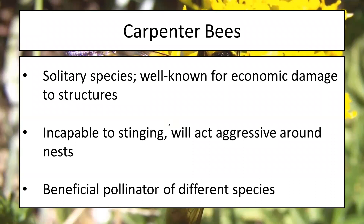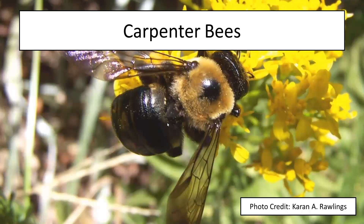Looking back at the image, the carpenter bee probably most closely resembles a bumblebee in terms of size. But look at how smooth its body is — it has a black patch on its thorax, and its abdomen doesn't have much in the way of hair. So it's much less hairy than our other species and will be more black overall. It's a little bit larger than mason bees. But I want to stress again: it is incapable of stinging — it's just doing damage to our property.